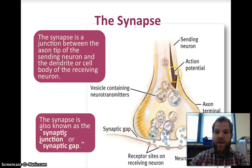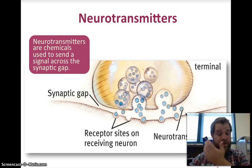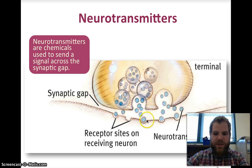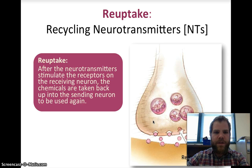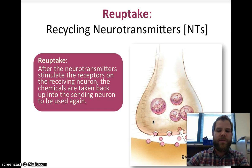As the action potential travels down, neurotransmitters are excreted and act as the communicator between the dendrite and the axon terminal. The receptor site on the receiving neuron receives these neurotransmitters. Neurotransmitters are chemicals used to send the signal across the synaptic gap. Not all of them are used — the brain recycles unused neurotransmitters in a process called reuptake, where they go back up and are used again.